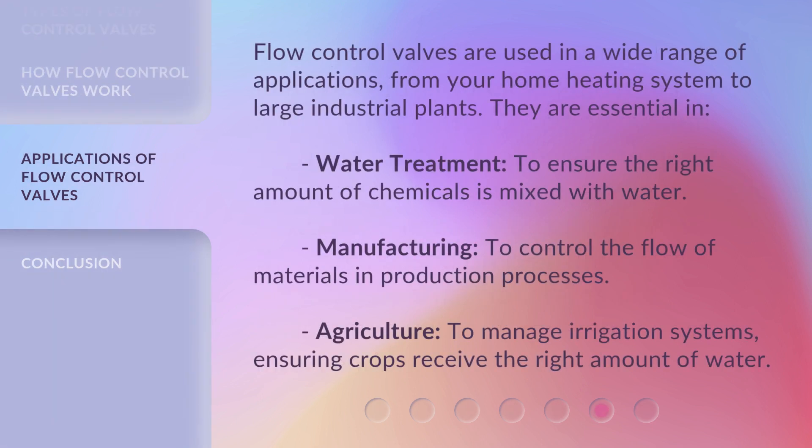Flow control valves are used in a wide range of applications, from your home heating system to large industrial plants. They are essential in water treatment, to ensure the right amount of chemicals is mixed with water; manufacturing, to control the flow of materials in production processes; and agriculture, to manage irrigation systems, ensuring crops receive the right amount of water.